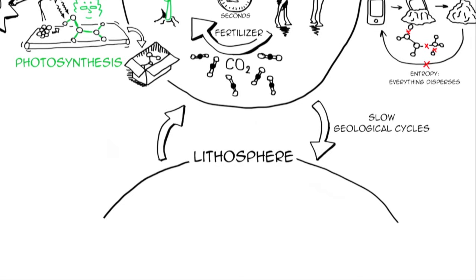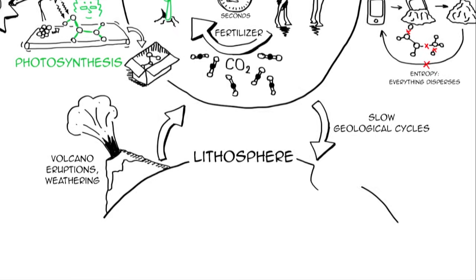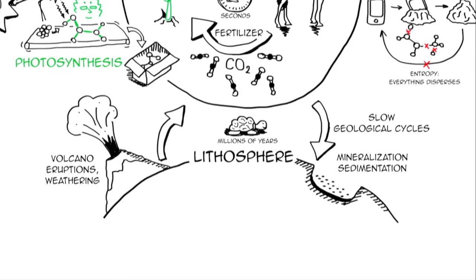Some matter moves from the earth's crust to the biosphere through things like volcano eruptions and weathering. And just about the same amount of matter goes back from the biosphere to the earth's crust via things like mineralization and sedimentations. And all this is very well balanced. These cycles take millions of years, they are very slow unlike the previous ones, and they also work well.